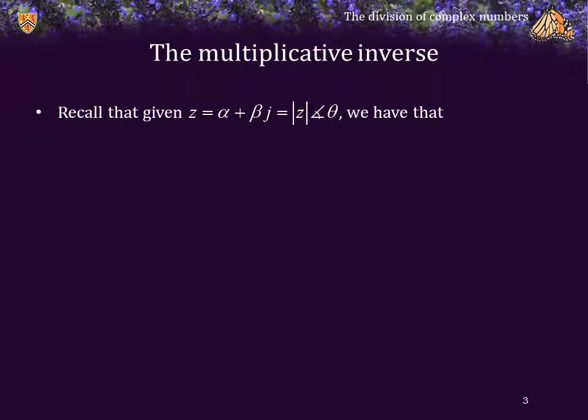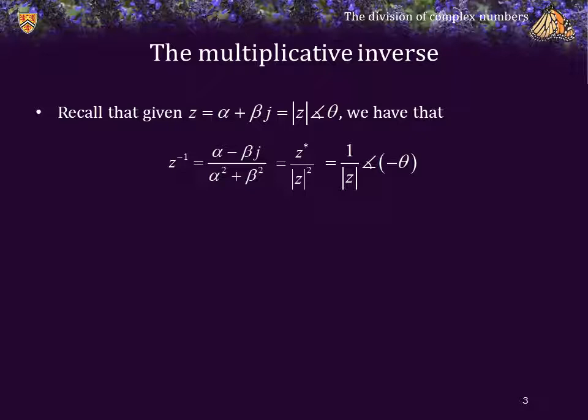Recall that given z is equal to alpha plus beta j, or the magnitude of z phase theta, we have that the multiplicative inverse is given by this expression here, which can also be represented by z-star over the magnitude squared, which is also equal to 1 over the magnitude of z phase negative theta.